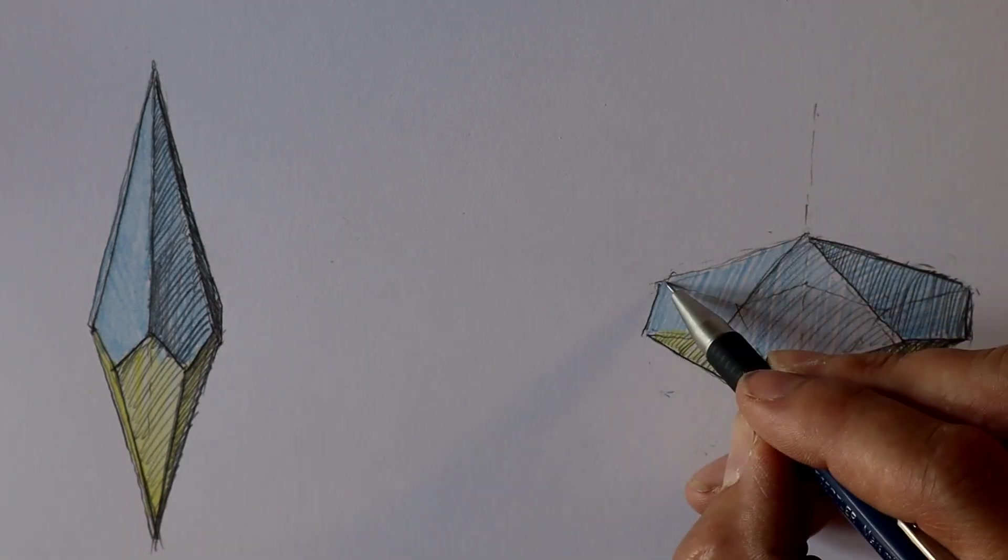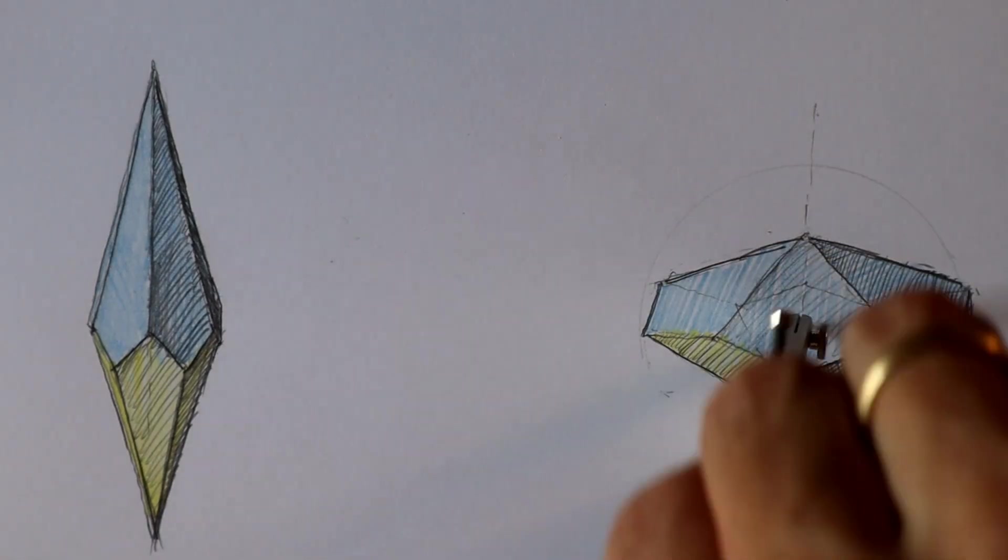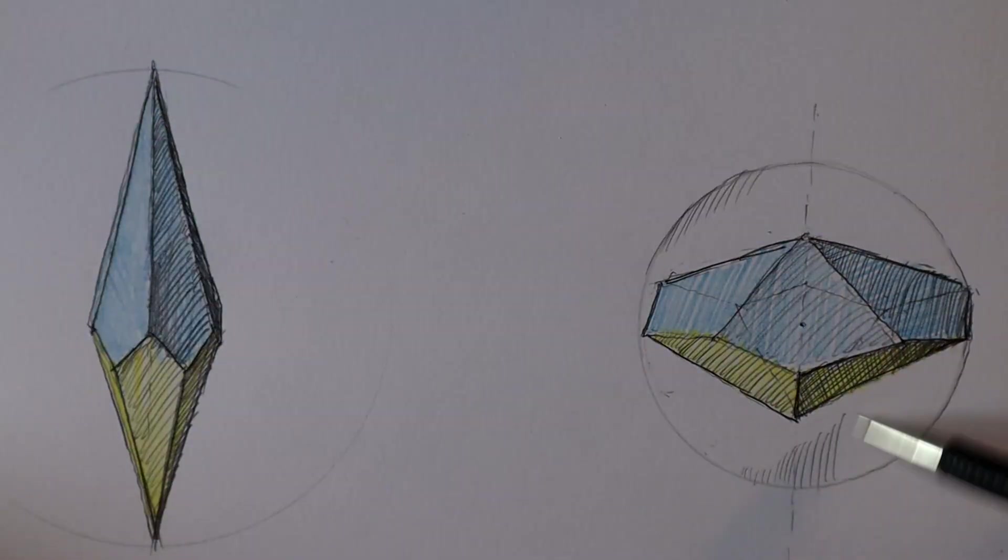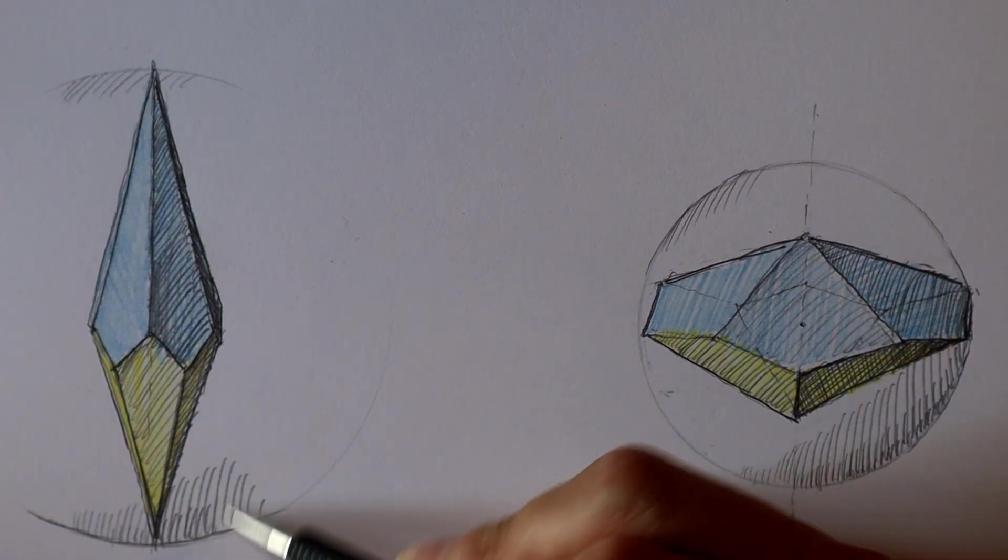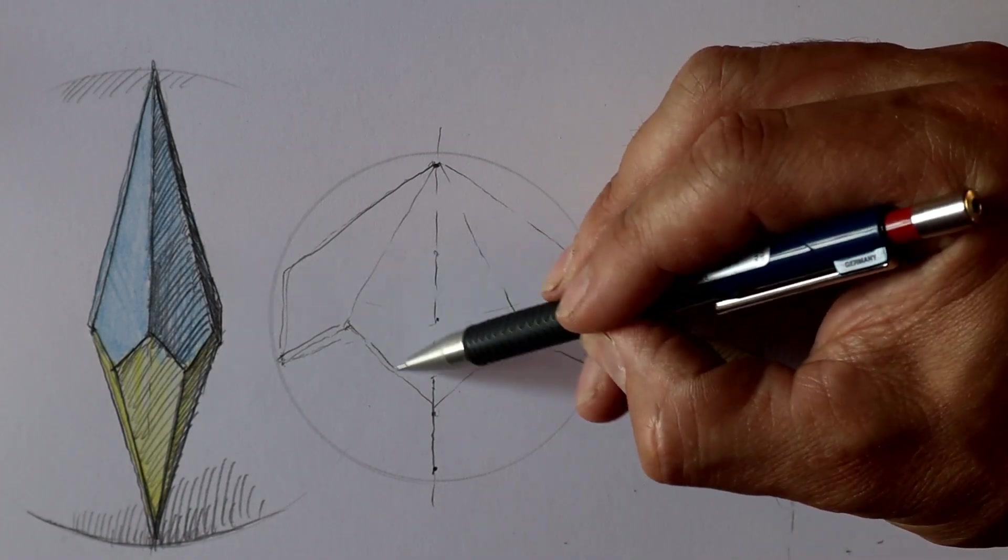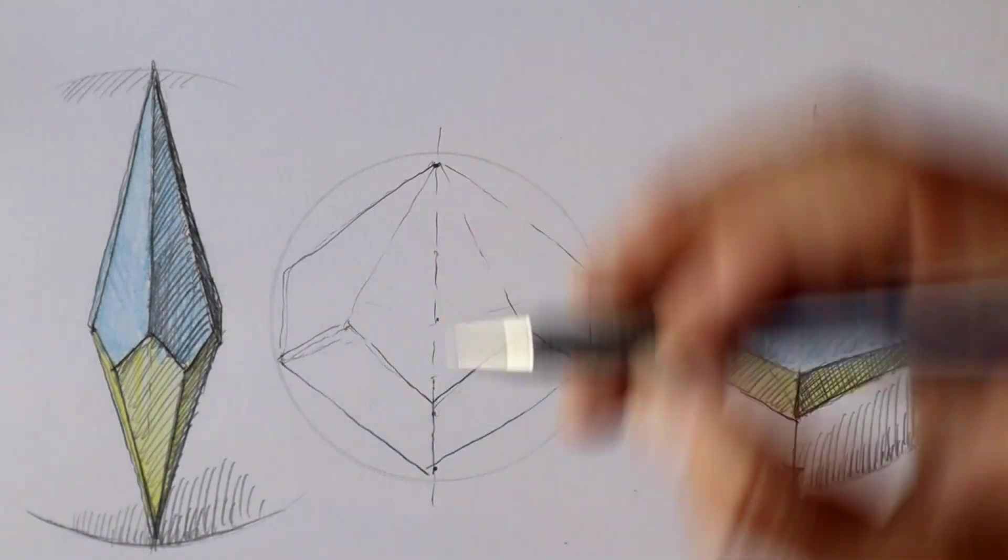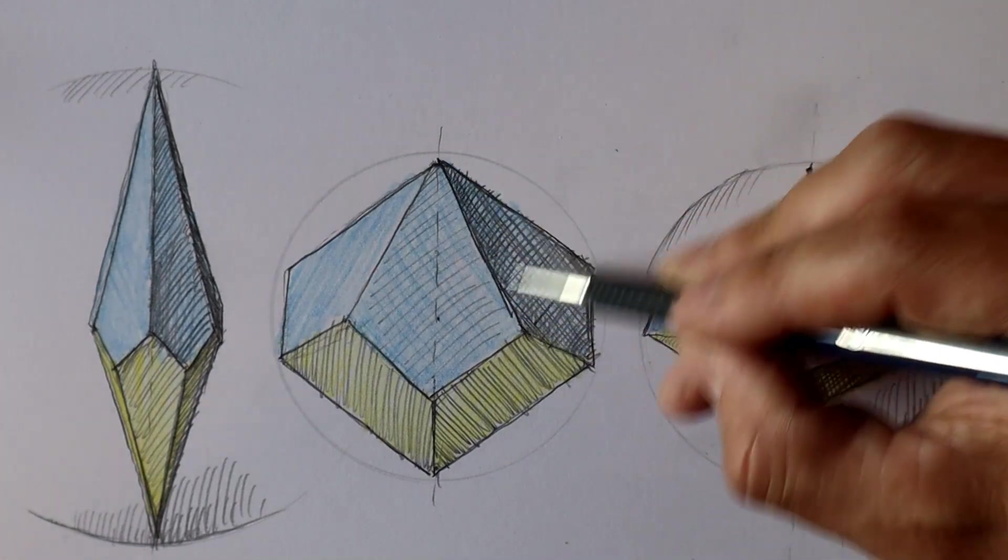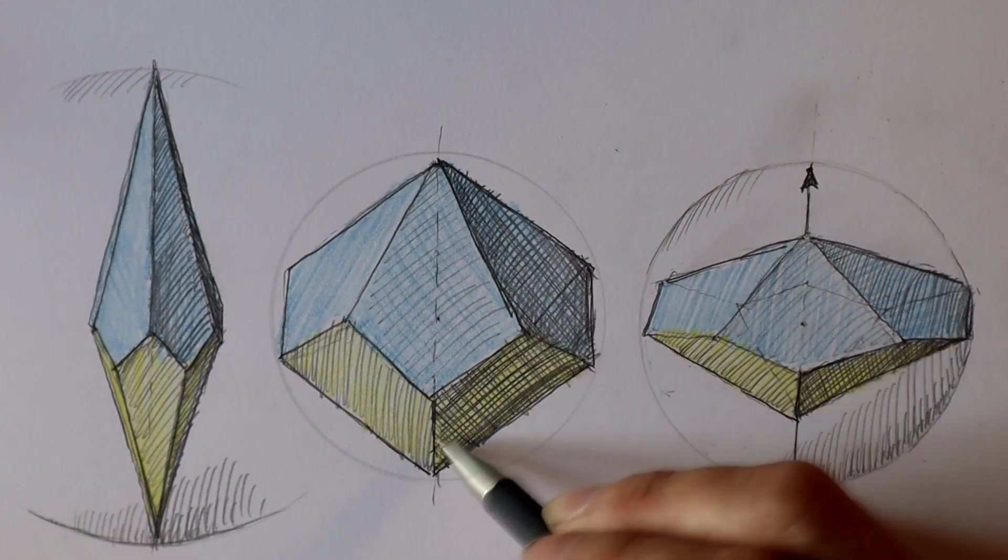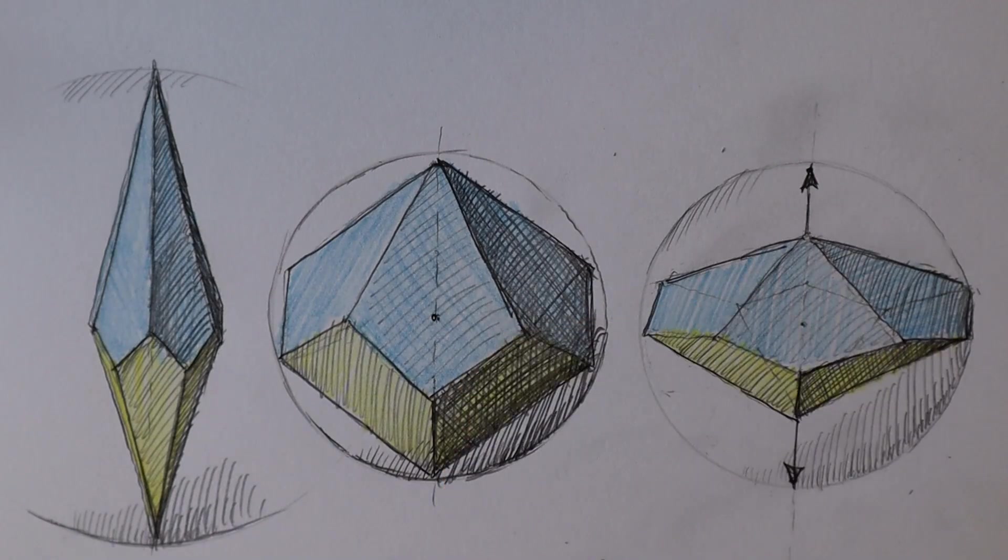Almost all of these trapezohedrons do not have a circumsphere, that's a sphere on which all corners of the solid would lie. But there is always exactly one where the height is chosen in such a way that it has a circumsphere. Exactly this special case I found interesting, especially the views from different angles.